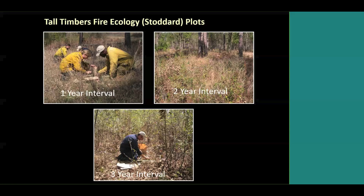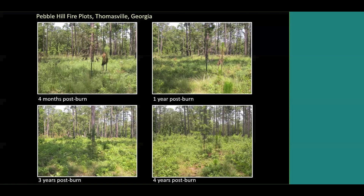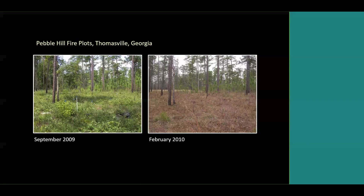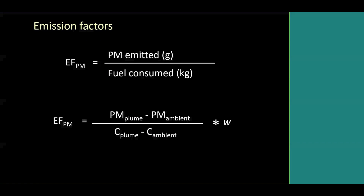Some burns occurred on the Tall Timbers fire ecology plots, ranging from one to three year fire return intervals, and also plots at Pebble Hill Plantation. Most of these research plots are about half an acre in size. This gives an example of the variation of fuel structure from four months post-burn to four years post-burn, where it becomes shrubbier and less herb-dominated over time. We measured fires over a range of times of year — some in the growing season, some in the dormant season — showing the percentage of cured fuels versus live fuels in different community situations.